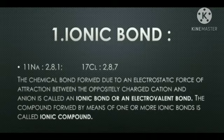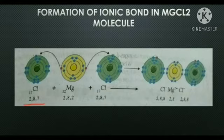The compound formed by means of one or more ionic bonds is called an ionic compound. You can also see the formation of an ionic bond in the MgCl₂ molecule.